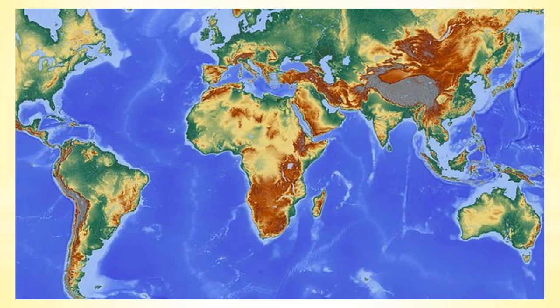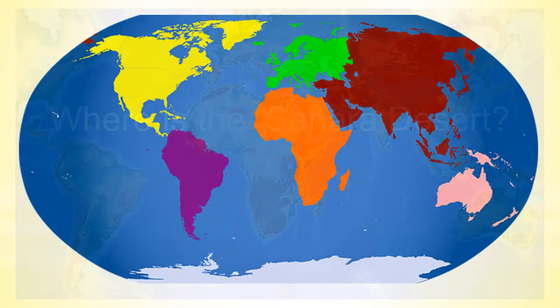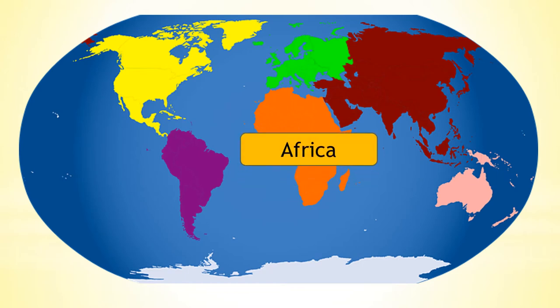So where is the Sahara Desert? The Sahara Desert is in Africa. Africa is a continent. A continent is a large area of land consisting of a number of countries. There are seven continents including Africa,